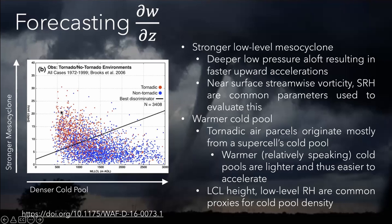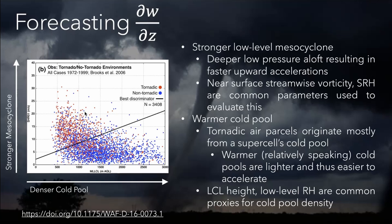On the left here I have a figure from a paper that illustrates the predictive power of just these two simple parameters. On the x-axis we see increasing mixed-layer LCL — as you go to the right on the graph, you're getting colder and more dense cold pools that are harder to lift. On the y-axis we see low-level shear increasing — shear in the lowest one kilometer — so as you go up you're getting stronger mesocyclones. You can see a clear clustering of tornadic events up and to the left of the graph, and non-tornadic storms to the right and to the bottom. Just using these two principles, you can get a pretty good idea of the probability that a supercell will produce a tornado. I have the link to the paper at the bottom if anyone's interested.